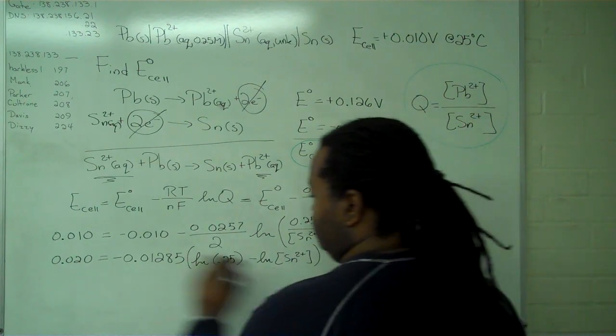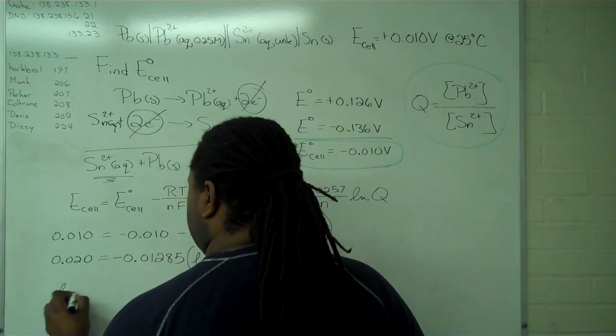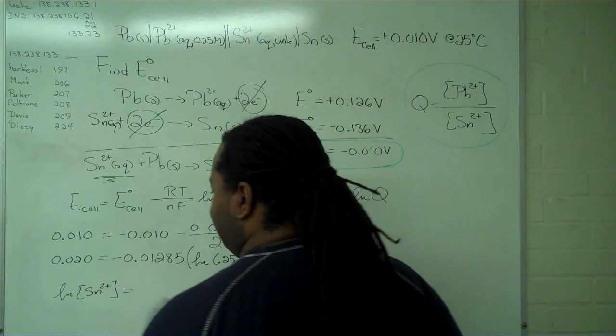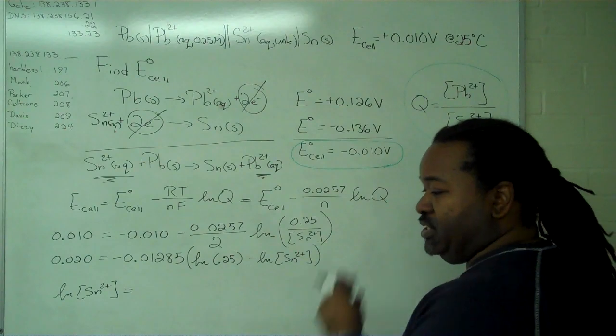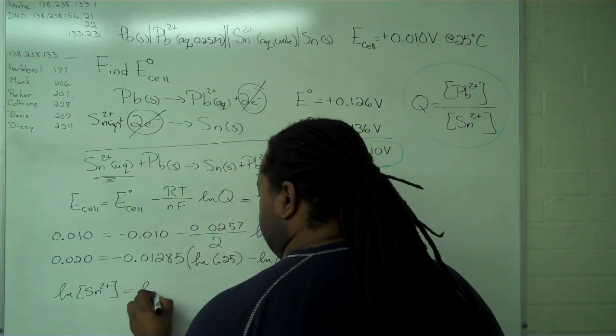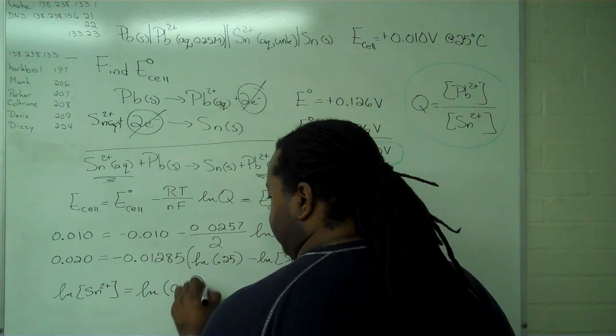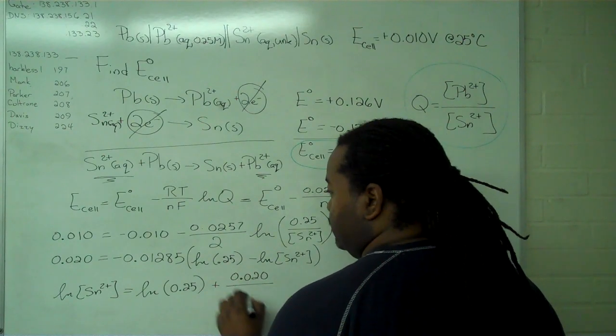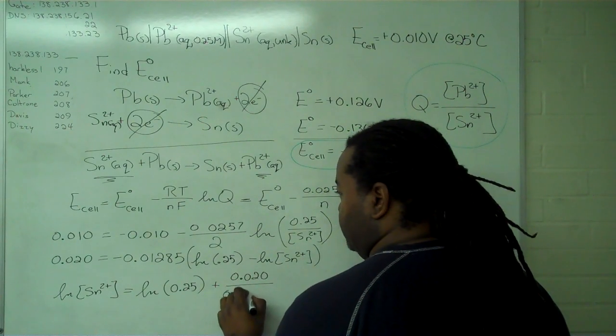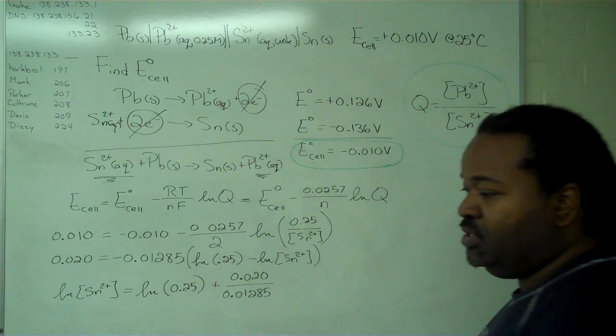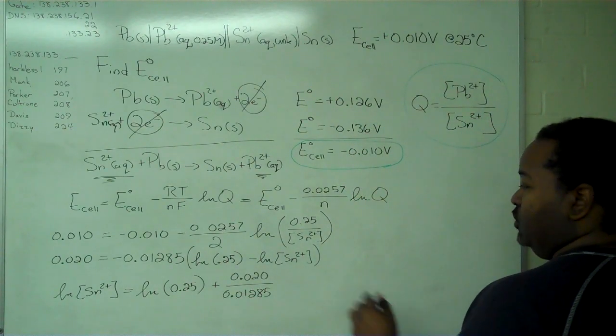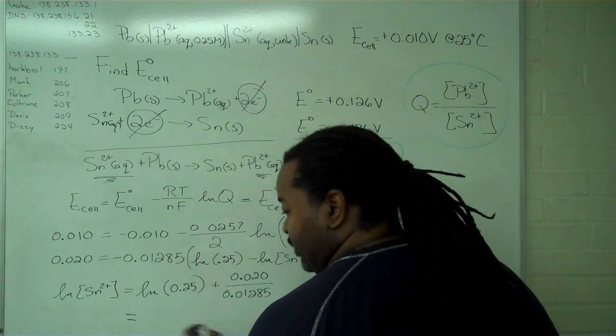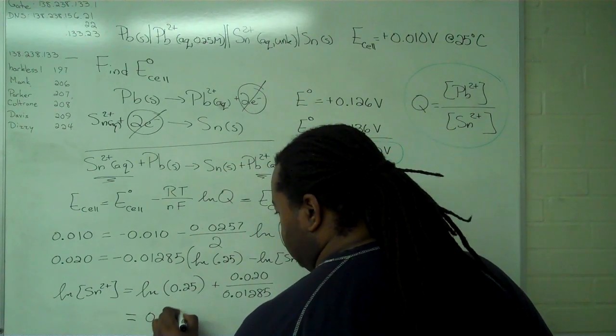Skipping past some math, which I encourage you to do yourself, the natural log of the tin concentration equals ln of 0.25 plus 0.020 divided by 0.01285. When we simplify through, after some algebra, we get a value of 0.17.